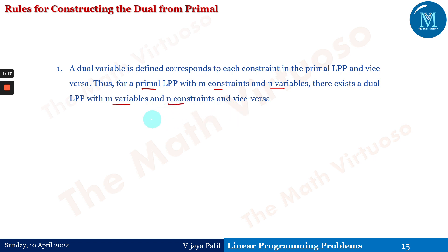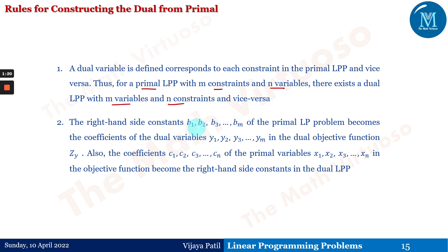Rule two: the right-hand side constants b1, b2, up to bm of the primal LP problem become the coefficients of the dual variables y1, y2, ..., ym in the dual objective function Zy. Also, the coefficients c1, c2, ..., cn of the primal variables x1, x2, ..., xn in the objective function become the right-hand side constants of the dual LPP. Both of these second points are very important to note.